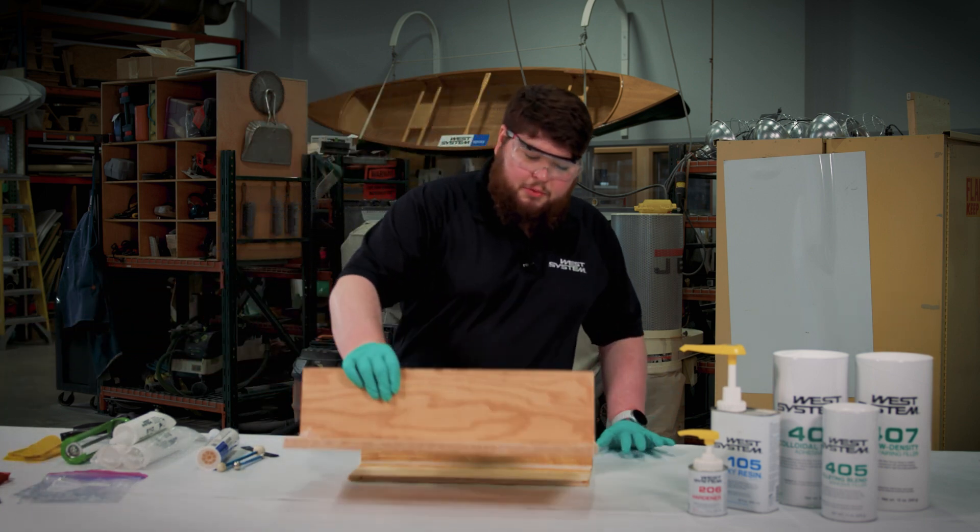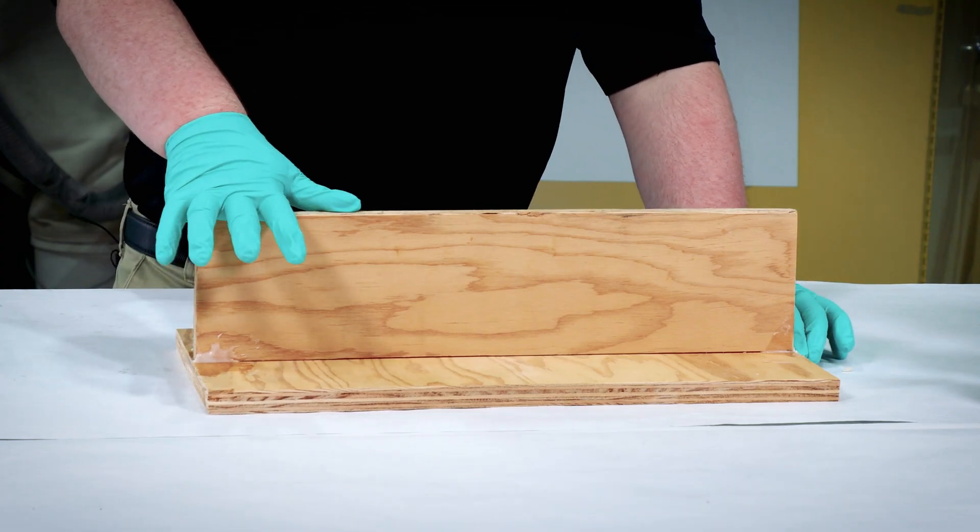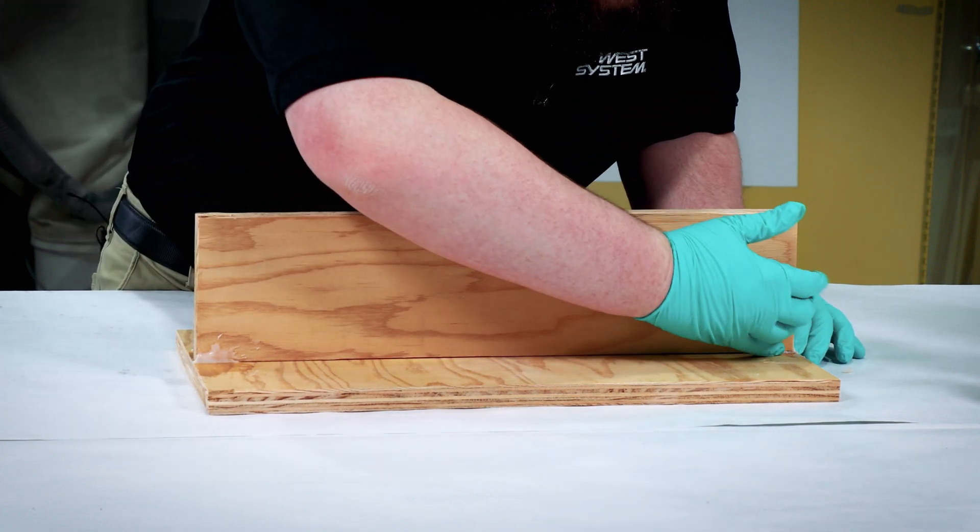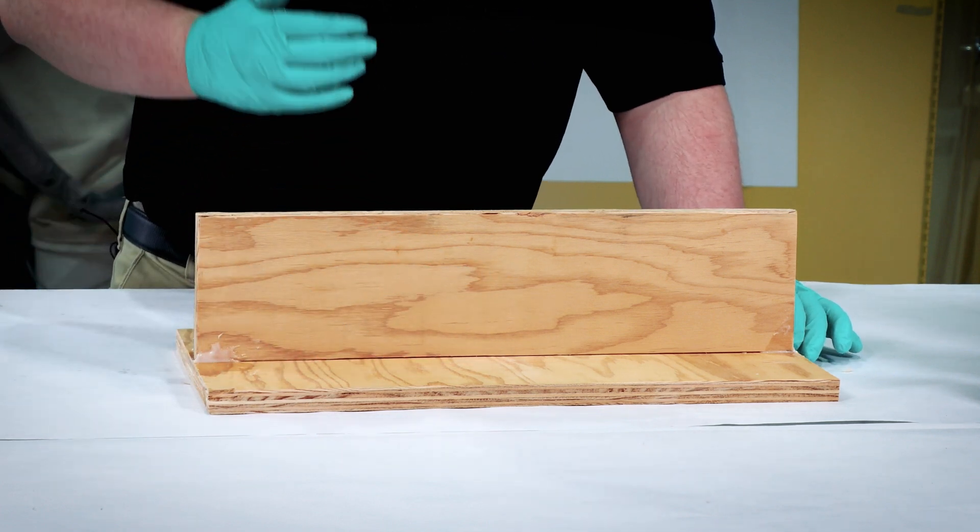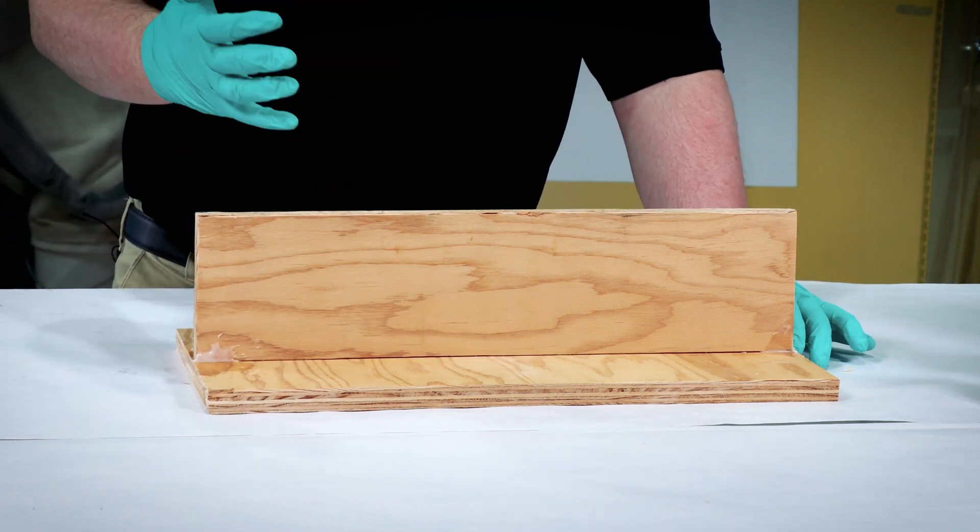Over here we have a board that we pre-bonded together that needs some fillets added. One important thing to remember when you're pre-bonding your boards like this is to get the thickened epoxy as close to this seam as possible. That way you're not trapping air pockets and you can draw it out into a nice clean fillet without any gaps.